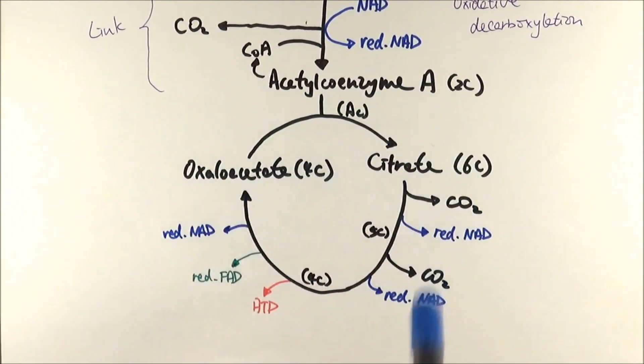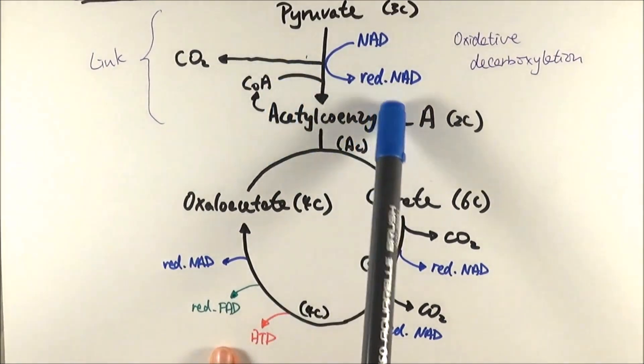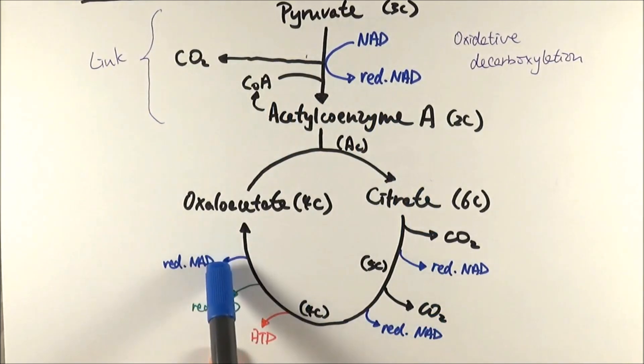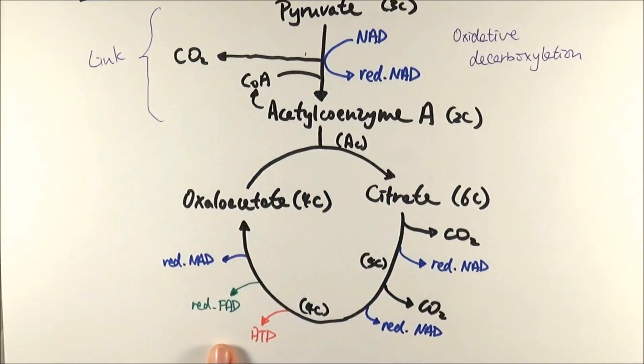Then we go back to oxaloacetate and then the whole cycle continues. This goes on and on to generate all these products. Remember, from this one pyruvate molecule we made one, two, three, four reduced NAD, and we made one reduced FAD. We made three carbon dioxide molecules and one ATP.